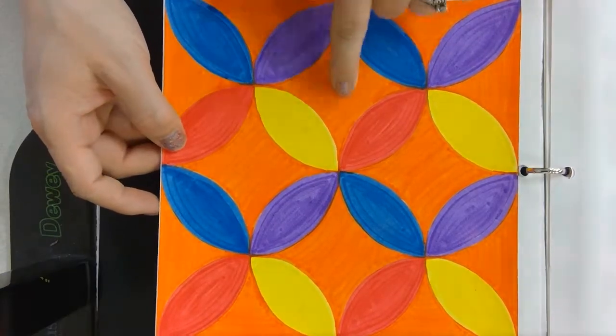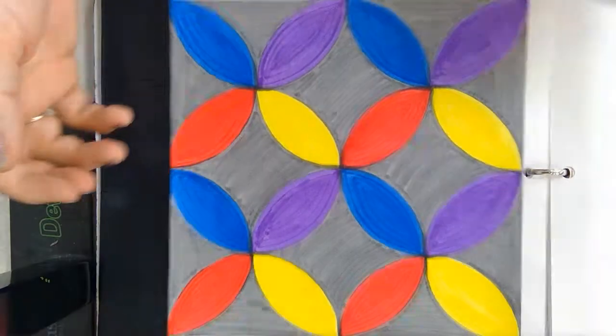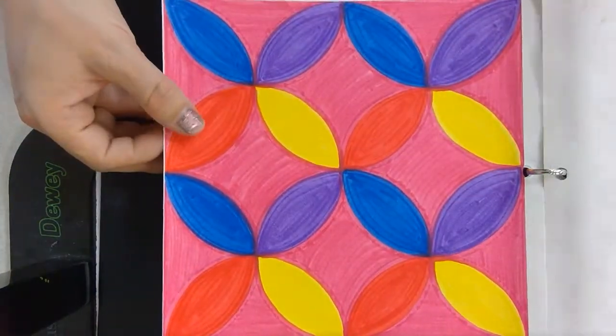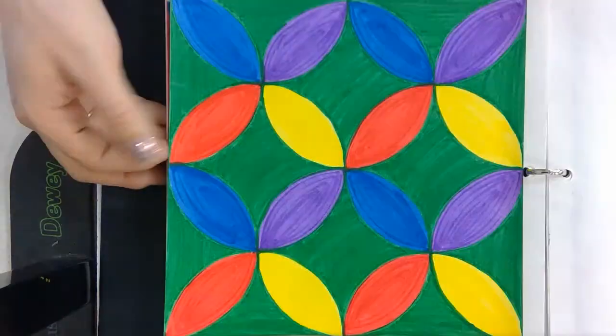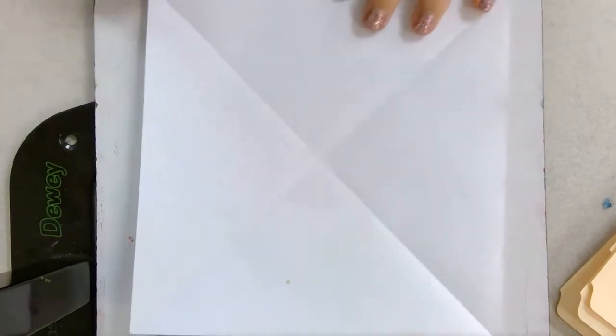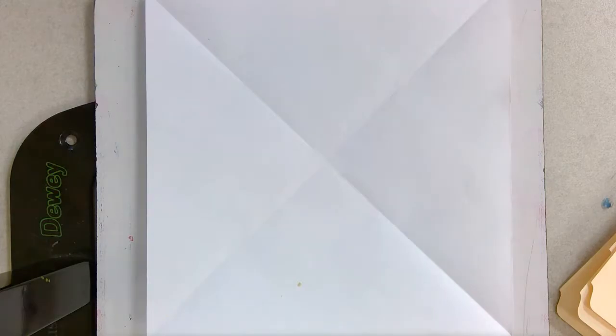Each of the designs has the same color, but the background color changes and that changes the look of the design. I'm going to show you today how to first fold a rectangular paper to make it into a square and then how to create this design very simply.